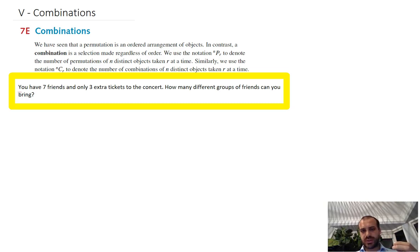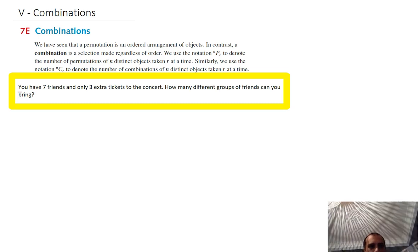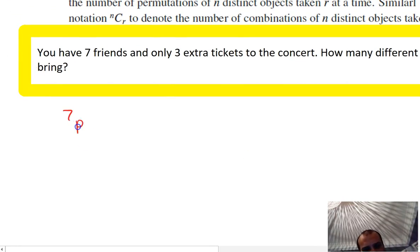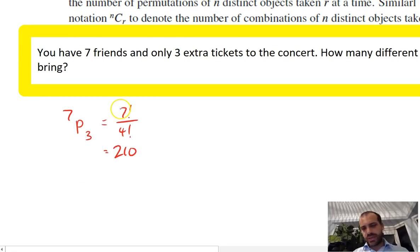This is different to a permutations question. Let's first do it as a permutations question. If you're to do it as a permutation question, that's pretty straightforward. It's seven permute three. Seven factorial over four factorial, which is 210.